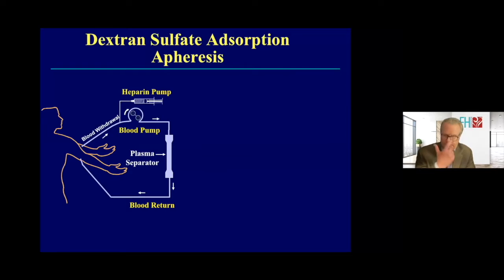This is how this works. Basically, use antecubital veins, draw the blood, add heparin to the blood so it stays anticoagulated, and then you go through a plasma separator to separate the plasma.